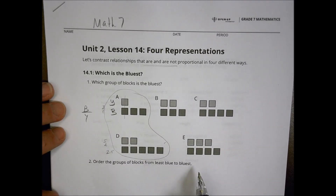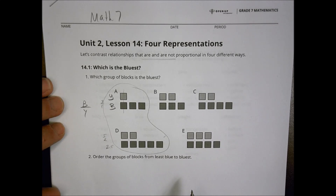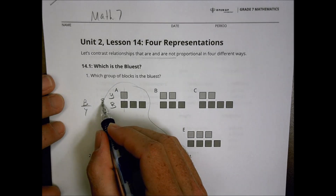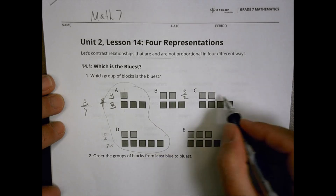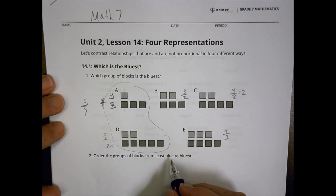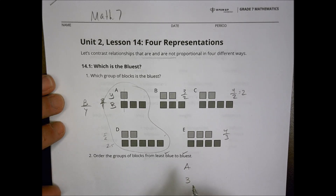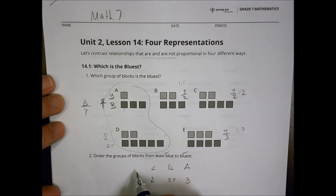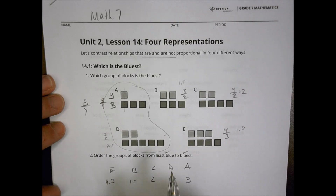If we did blue over yellow as fractions: three over one, five over two, three over two, four over two (which is two), and four over three. Ranking from least to greatest blue: A is greatest at three, D is second at 2.5, C is at two, B is at 1.5, and E is least at about 1.33.